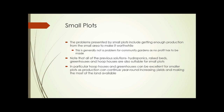Small plots present challenges in getting enough production from a small area to make it worthwhile, though in a community garden context profit isn't required. All the solutions discussed — hydroponics, raised beds, aquaponics, greenhouses, and hoop houses — are suitable for small plots. Hoop houses and greenhouses are especially well-suited because production can continue year-round, increasing yields and maximizing dollars per square foot by growing 12 months out of the year.